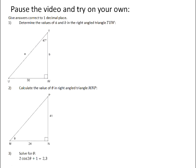Number one, determine the values of A and B in the right angle triangle TUW. Okay, so if we have a look, the angle that we have been given is at vertex T and it's 47 degrees.